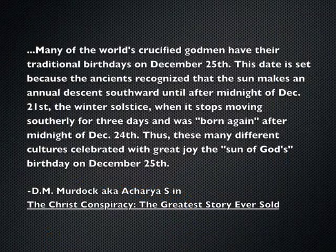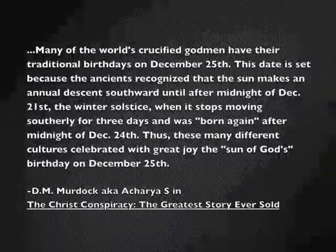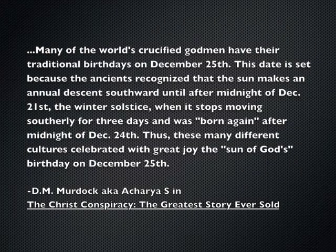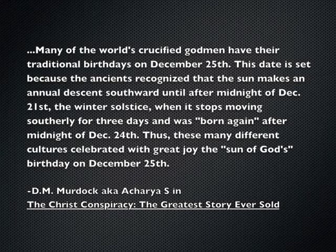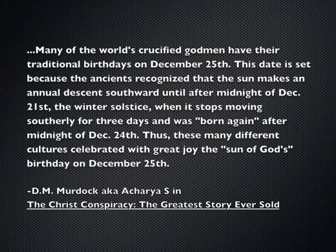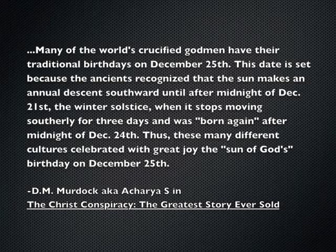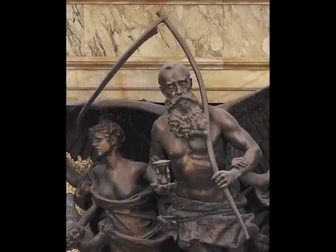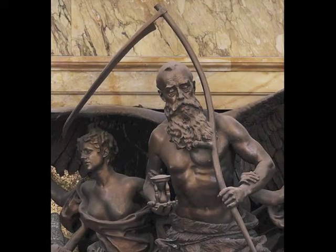Acharya S says in The Christ Conspiracy that many of the world's crucified godmen had their traditional birthdays on December 25. This date is set because the ancients recognized that the sun makes an annual descent southward until after midnight of December 21, the winter solstice, when it stops moving southerly for three days and was born again after midnight of December 24. Thus, many different cultures celebrated with great joy the sun of God's birthday on December 25. Christmas 2012 marks the beginning of a new great year.